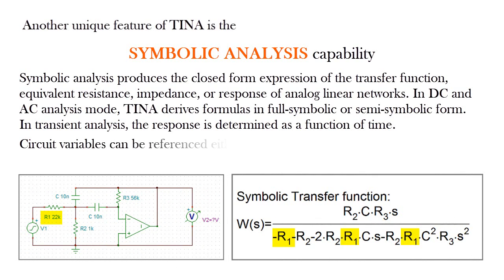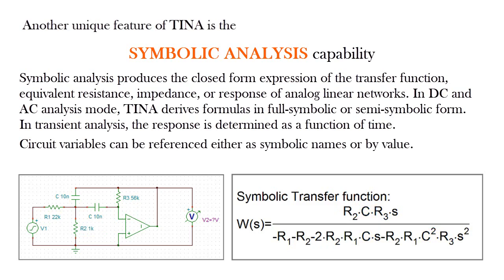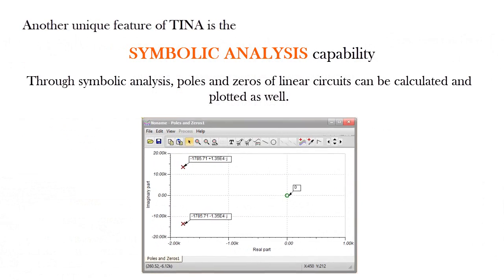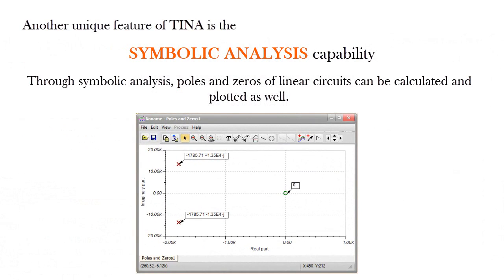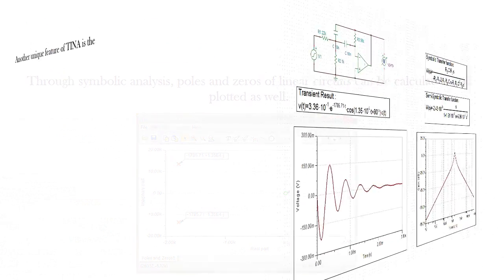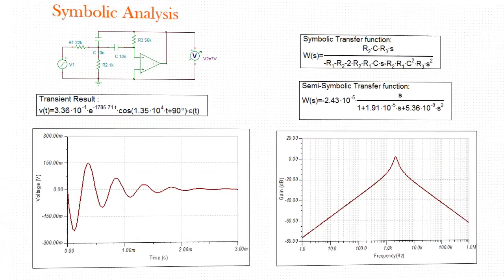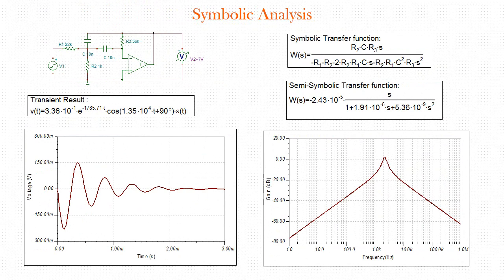Circuit variables can be referenced either as symbolic names or by value. Through symbolic analysis, poles and zeros of linear circuits can be calculated and plotted as well. For example, let's see the symbolic and numerical analysis results of an active bandpass filter.